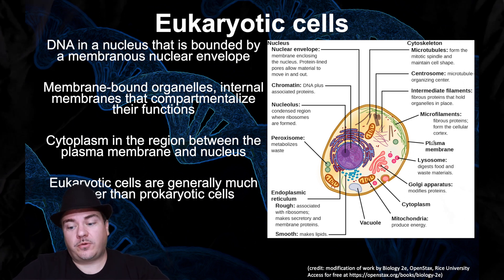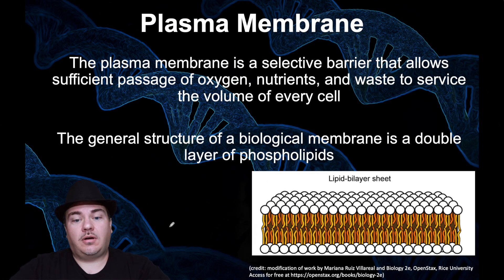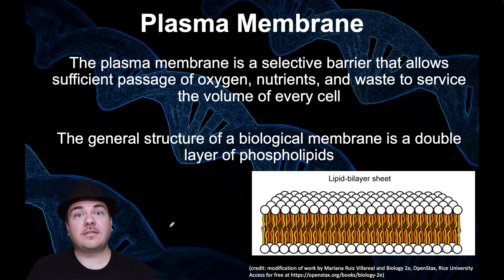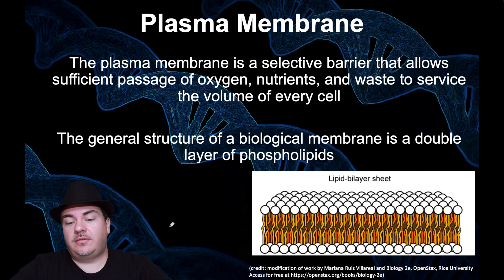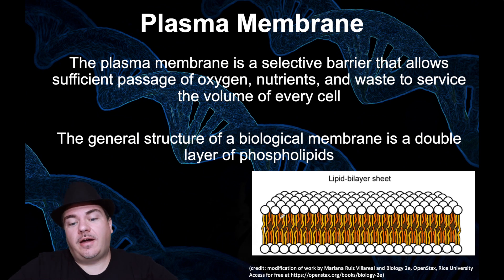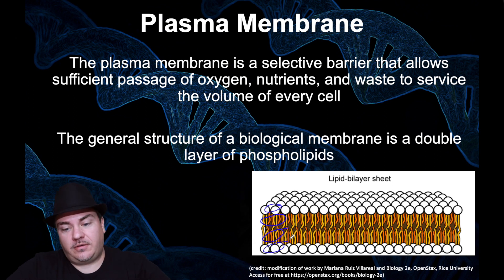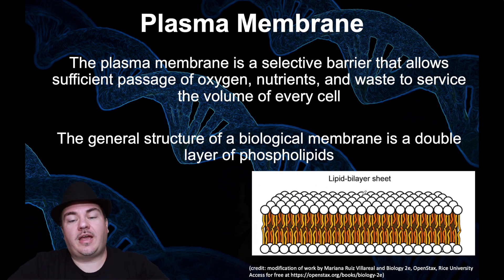Recall that all cells have a plasma membrane — the boundary and barrier of the cell, which separates the cell from the environment around it. The plasma membrane is made up of a phospholipid bilayer, which we learned about in the macromolecules discussion. That means two layers of phospholipids with hydrophobic, water-hating tails and hydrophilic, water-loving heads. The center of the membrane is hydrophobic, and the periphery is hydrophilic.